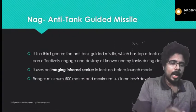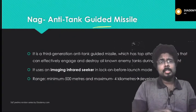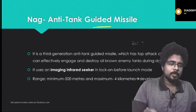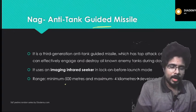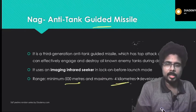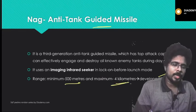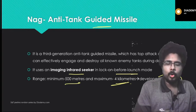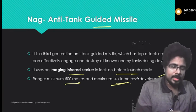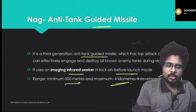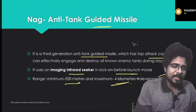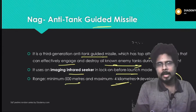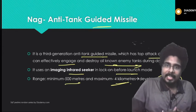Next, the NAG anti-tank guided missile. NAG is one of India's guided missiles. The range of the NAG anti-tank guided missile is a minimum of 500 meters and a maximum of 4 kilometers. It is developed by DRDO and uses an imaging infrared seeker in lock-on-before-launch mode.